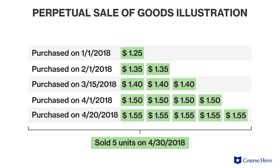Under the perpetual cost system, the computation of the cost flow is made at each sale. For example, a business purchased units on January 1st, February 1st, March 15th, and April 1st and April 20th. Assume this business is using the last-in, first-out method, or LIFO. What are the last units? It depends on when the sale occurs. If a sale occurs on March 13th, the last units are those purchased on February 1st. If a sale happens on March 17th, the last units are those purchased on March 15th. In a perpetual inventory system, the notion of last, first, or average is computed with reference to each sale and the inventory on hand right before that sale.